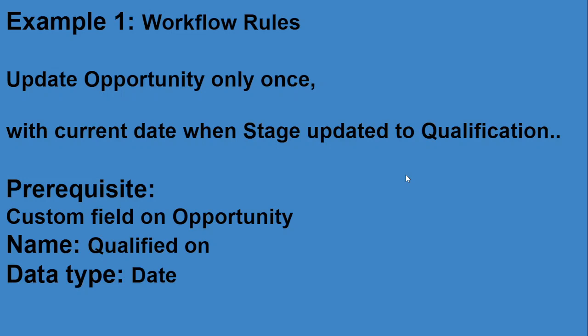The first example I'm going to bring is a workflow rule. One of my student assistants was assigned a story: whenever the user creates or updates an opportunity and the stage moves to the Qualification stage, the opportunity should be automatically updated with the current date stamp.